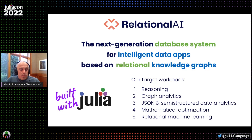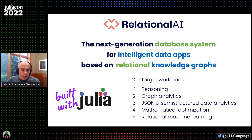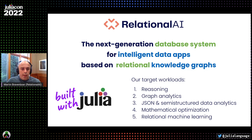I've listed a few of our target workloads — what we aim to support — so you have an idea of what we want to do. That includes reasoning, graph analytics, JSON semi-structured data analytics, mathematical optimization, and relational machine learning. This is at the core built with Julia, and I'll highlight exactly which parts are in Julia and how that's working for us.